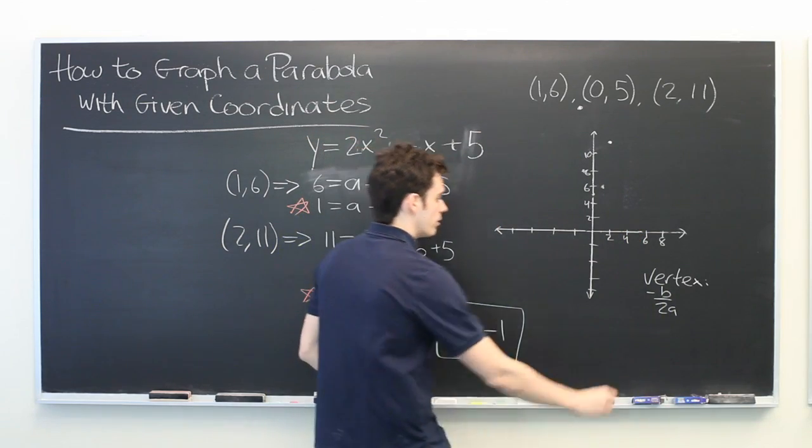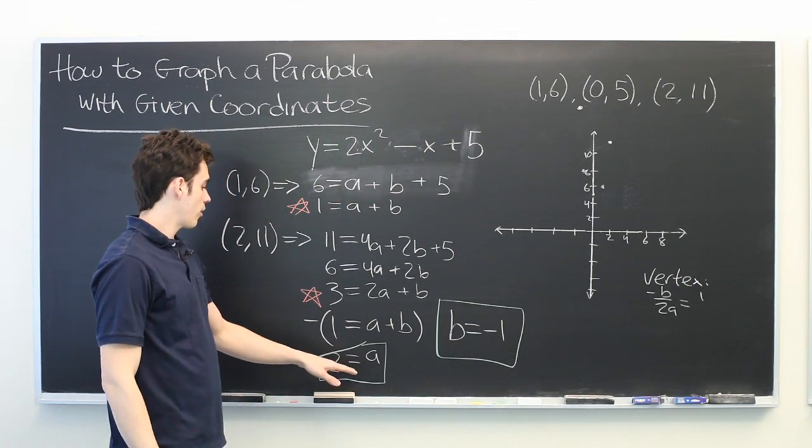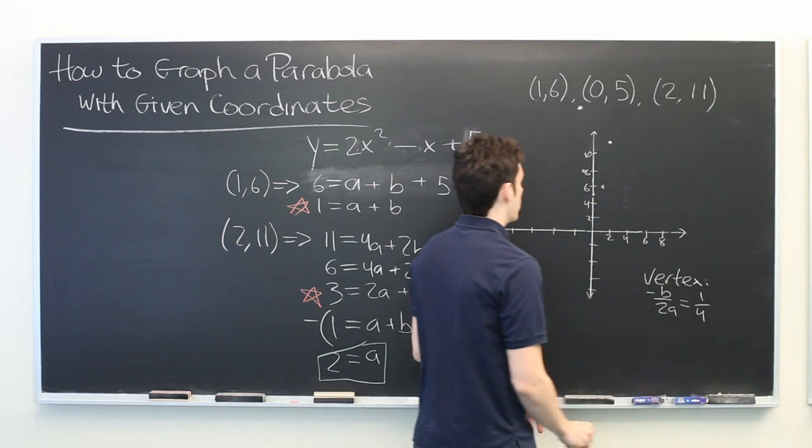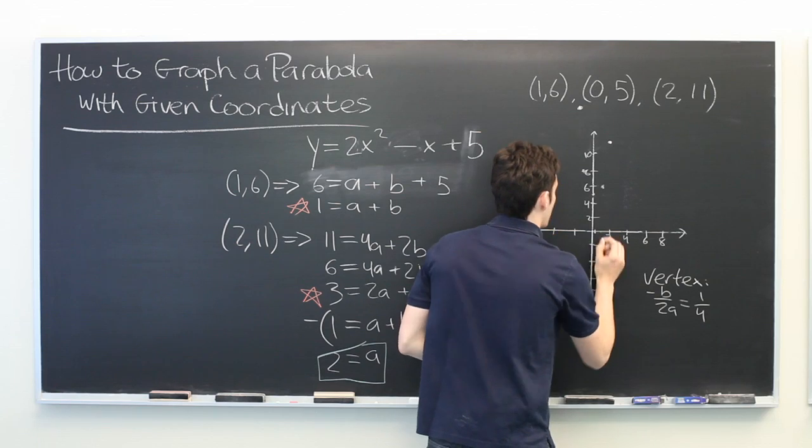Where our b is negative 1, that becomes 1. And our a is 2, so the denominator becomes 4. So the x-coordinate of our vertex is at 1/4.